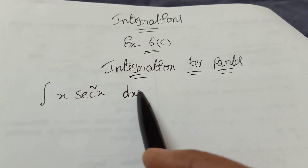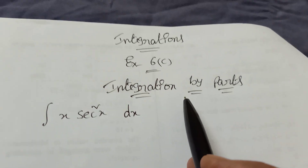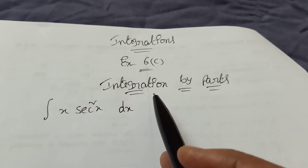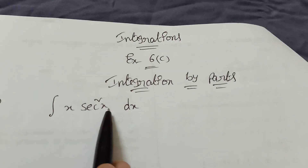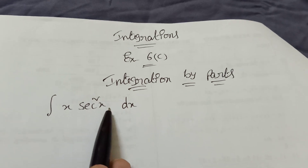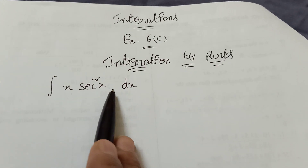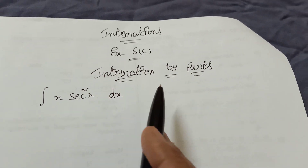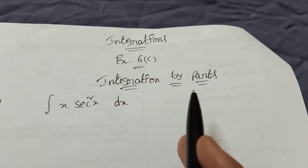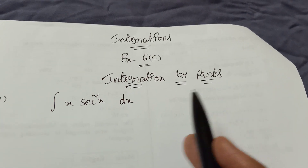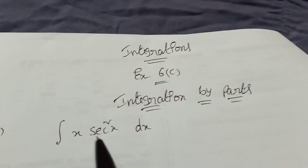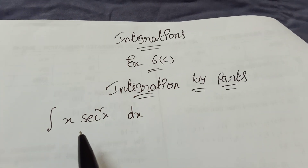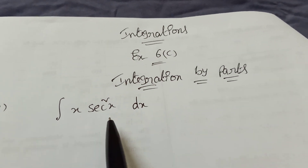Now, integration by parts. We already learned derivatives — the UV formula. Suppose two functions are there, then the UV formula is u·dv + v·du. That is the derivative formula. But in integration, how do we apply the UV formula?